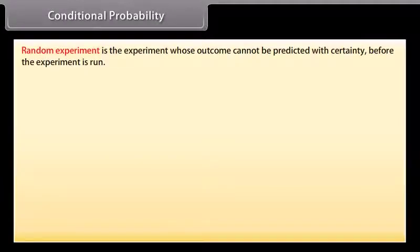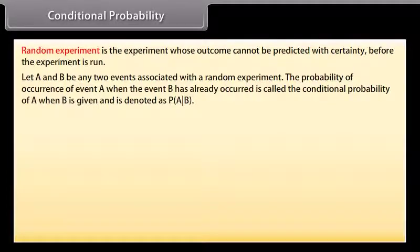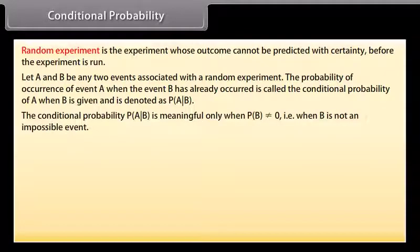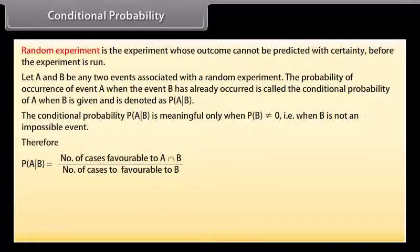Conditional probability. A random experiment is an experiment whose outcome cannot be predicted with certainty before the experiment is run. Let A and B be any two events associated with a random experiment. The probability of occurrence of event A when event B has already occurred is called the conditional probability of A given B, denoted as P(A|B). It is meaningful only when P(B) ≠ 0. Therefore, P(A|B) equals the number of cases favorable to A∩B divided by the number of cases favorable to B.